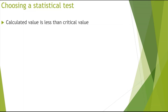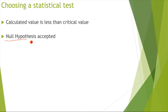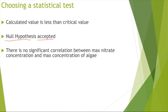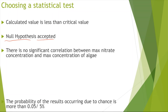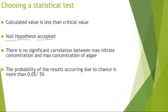The calculated value of 0.16 is less than the critical value of 0.89, so you can accept the null hypothesis. There is no significant correlation between the max nitrate concentration and the max concentration of algae, and the probability of the results occurring due to chance is more than 0.05 or more than 5%.